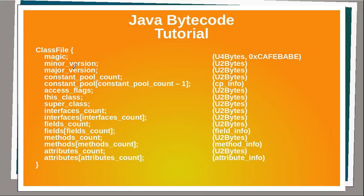Then we have this array which contains a list of object strings referred to within this structure and its sub-structures — this is the index. The access flags is a mask of flags which tells you whether this is an interface, or a class, or whether it is private or public, etc. This class and superclass are indices of the constant pool array, pointing at this class and its superclass. This array contains all super interfaces. This other array, of field info type, contains all fields, giving you the name of each field and whether it's private, public, protected, and so on.